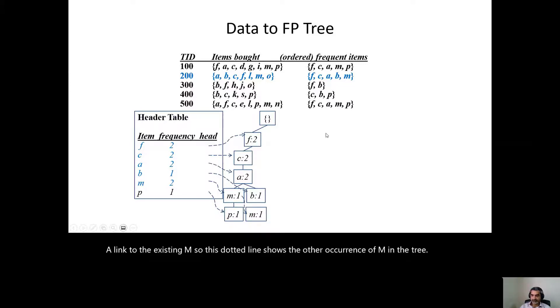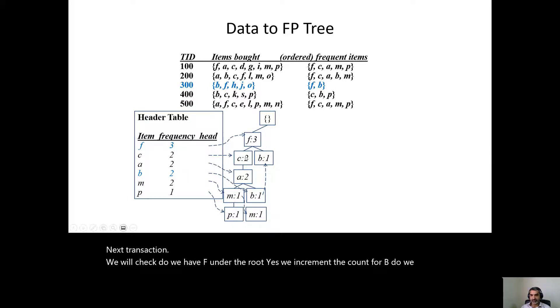Next transaction, F, B. We will check, do we have F under the root? Yes, we increment the count. For B, do we have B under F? No. So we create a node B and put the address of this node in the previously recorded node in the tree. Will you help me do this transaction, C, B, P? What shall we do for this transaction, C, B, P, to put into the tree? We will check, do we have C under the root node? We don't have.